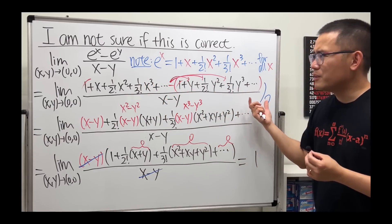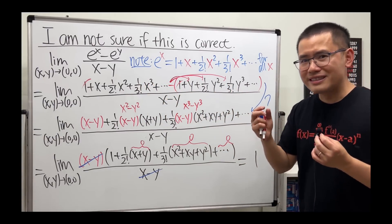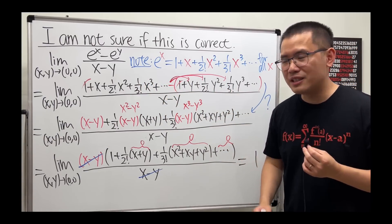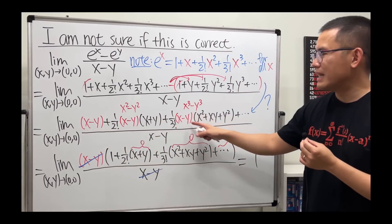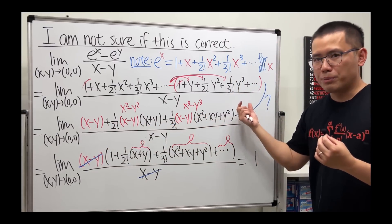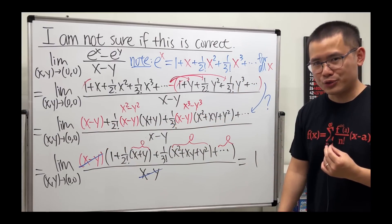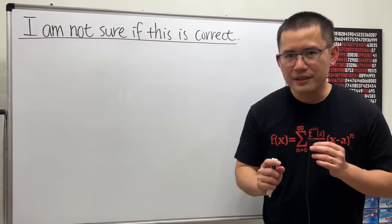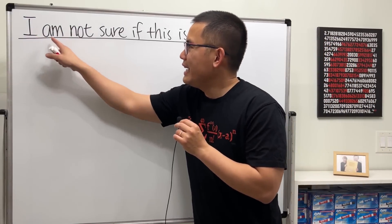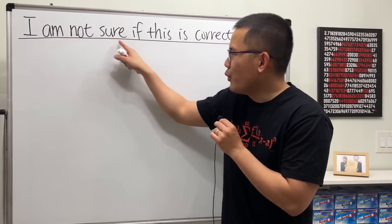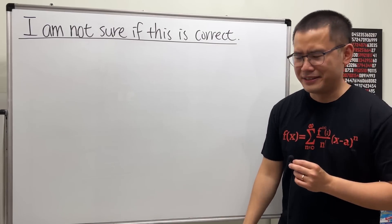They both have infinitely many terms, but do they really have the same amount of infinitely many terms that allows me to factor out the x minus y once we pair them up? That's the main concern which I'm not sure about. Today is going to be different because I am not sure if this is correct.